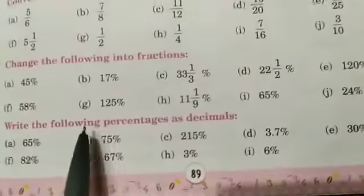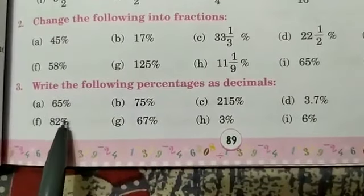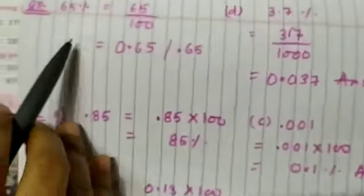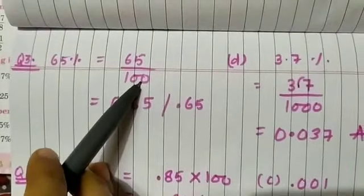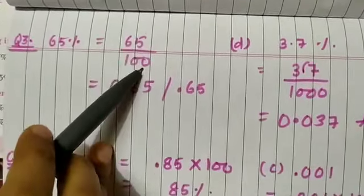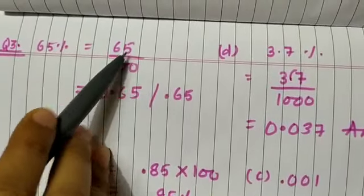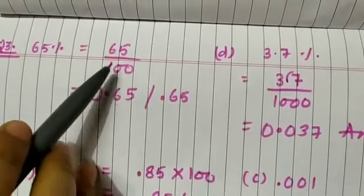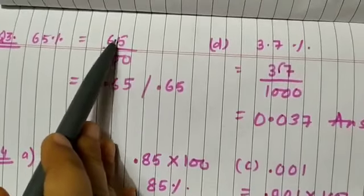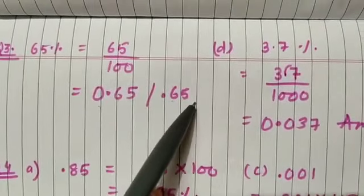Question number 3: write the following percentages as decimals. These numbers are written in percentage and we have to convert them to decimals by dividing by 100. So 65 percent equals 65 by 100. There are two zeros in the denominator, so we count two digits from the right and put the decimal before them. The answer is 0.65.